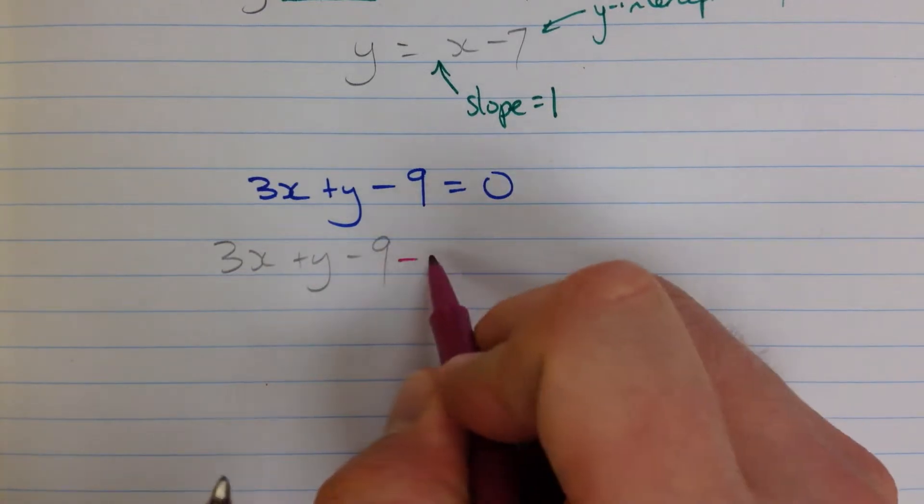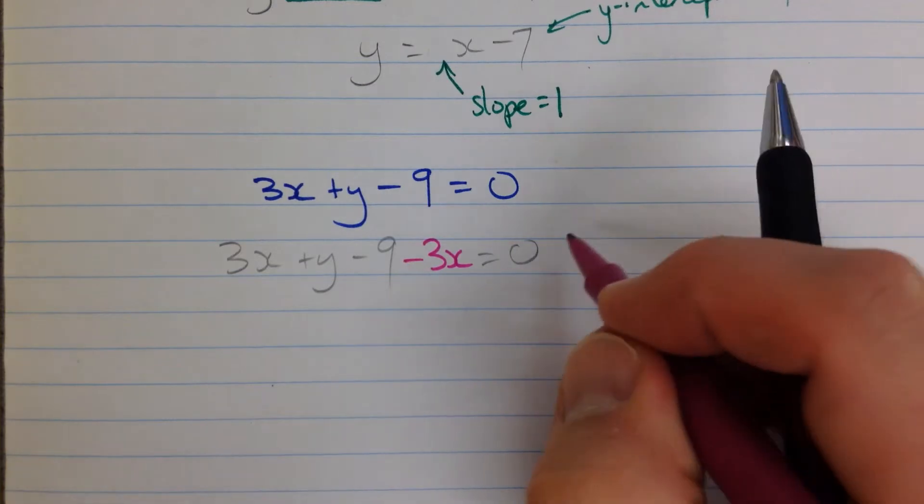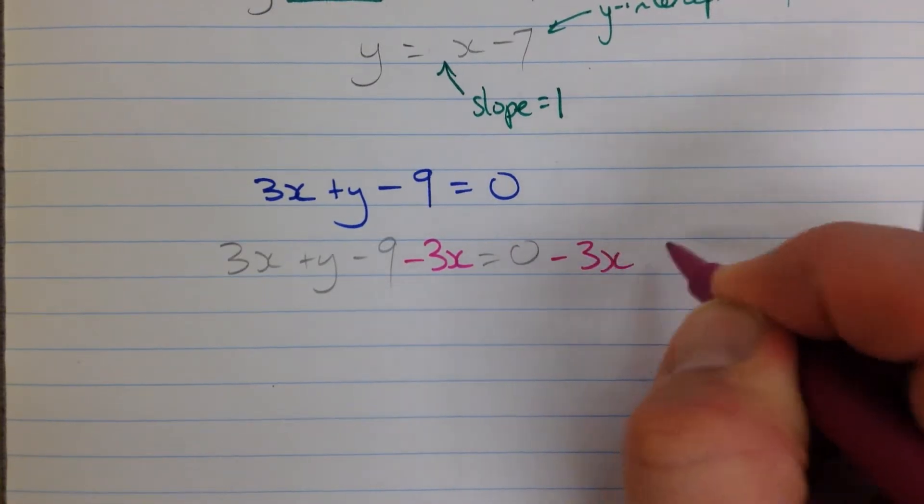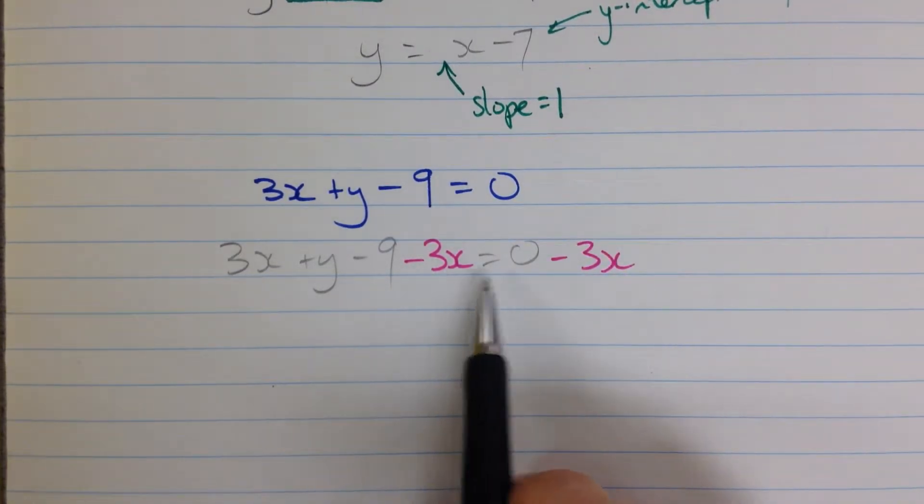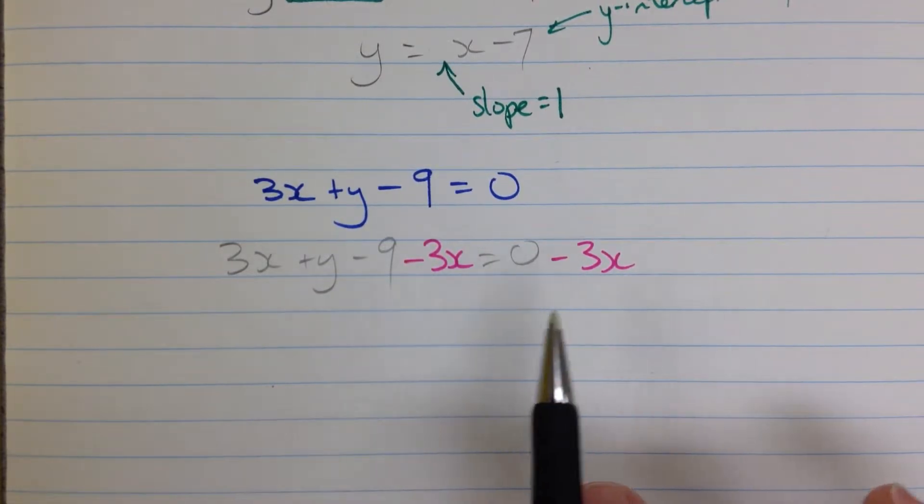So 3x plus y minus 9 is our original equation. Let's subtract 3x, and we'll do that from both sides of the equation. So there's the new thing on both sides. We've subtracted 3x. Because we did the same thing to both sides, the equation is still valid and still balanced.